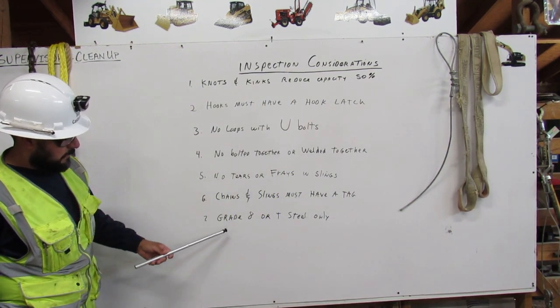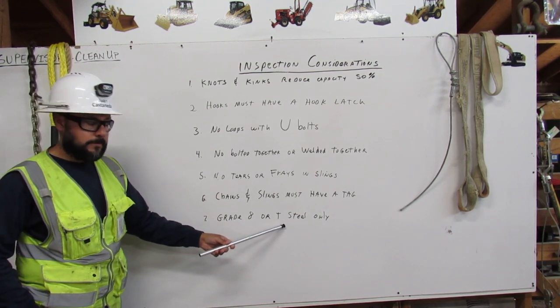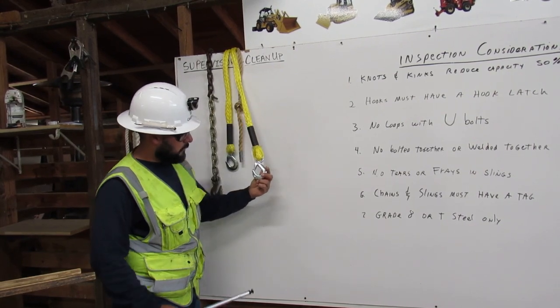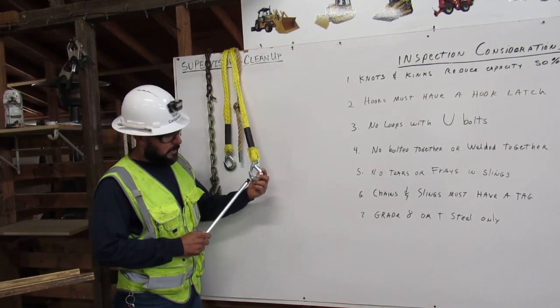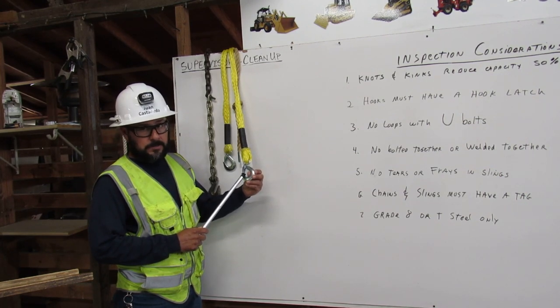Number seven, grade eight or T-steel only. This hook here, it's not grade eight and it's not T-steel. So we cannot use it.